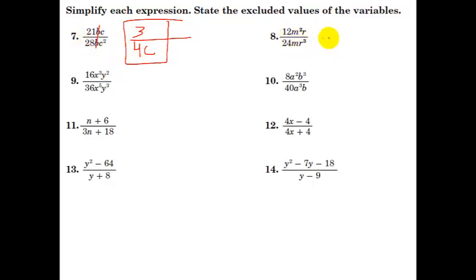Let's try one more here. 12 over 24 reduces to 1 half. m squared over m is going to put an m in the numerator. And r over r cubed, that means the bottom wins by 2, so we're going to have an r squared in the denominator. So 1m over 2r squared. So if they're just monomials, simplify using your exponent rules.